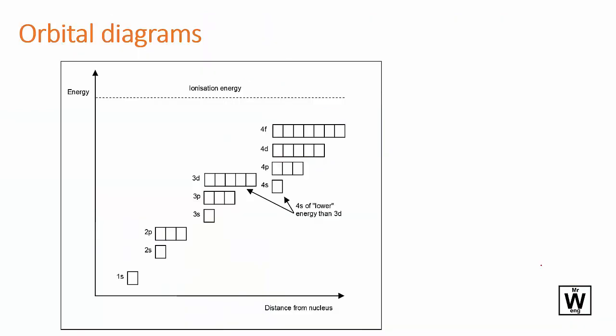Orbital diagrams basically just show you where the electrons are, the up and down spins. Hopefully you should watch the electron configuration video first so you know the three rules, the Aufbau principle - you fill them in from the lowest energy levels first.